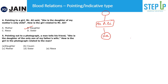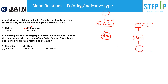Another example: a man tells his friend, 'she is the daughter of the only son of my father's wife.' The man is male. His father's wife is his mother. The only son of his mother is himself. Therefore, that girl is his daughter. How is the girl in the photograph related to the man? She is his daughter.